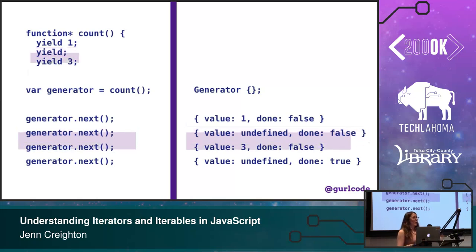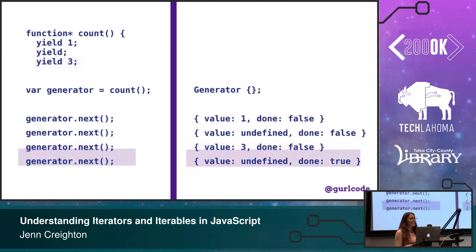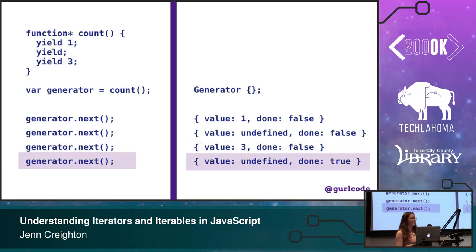If we call next again, we're yielding three — value three, still not done. Now we call next again, it goes back into the generator and sees there's nothing else to be done, so done is actually true. And since we're not yielding any final value, value is undefined.